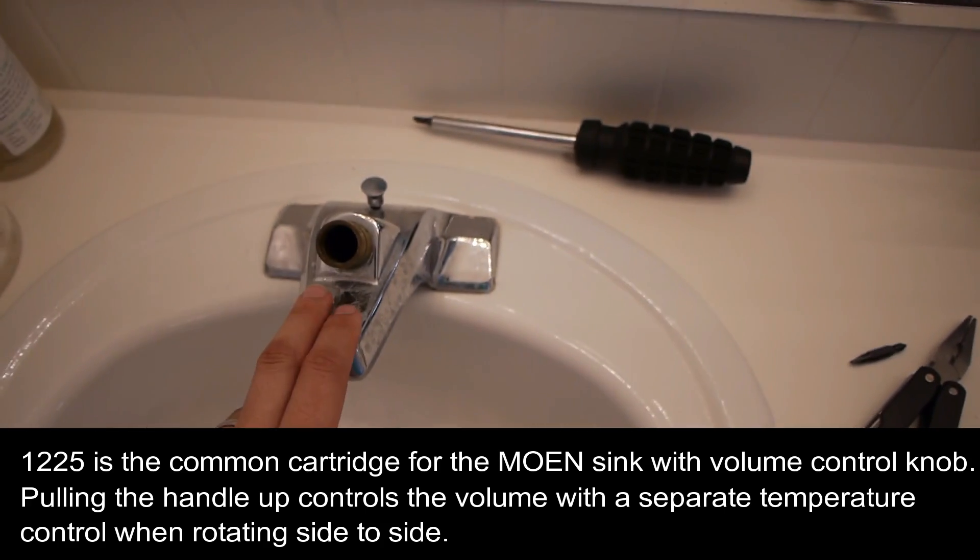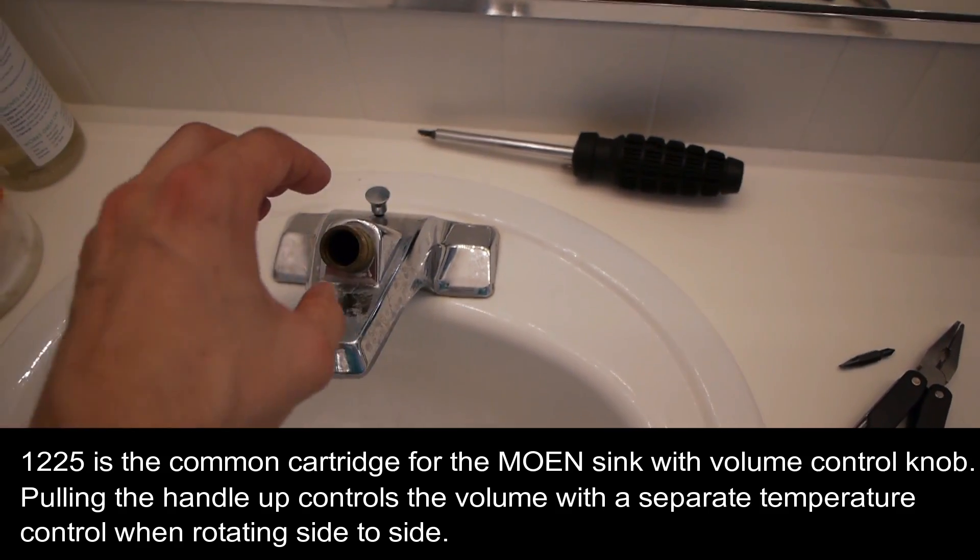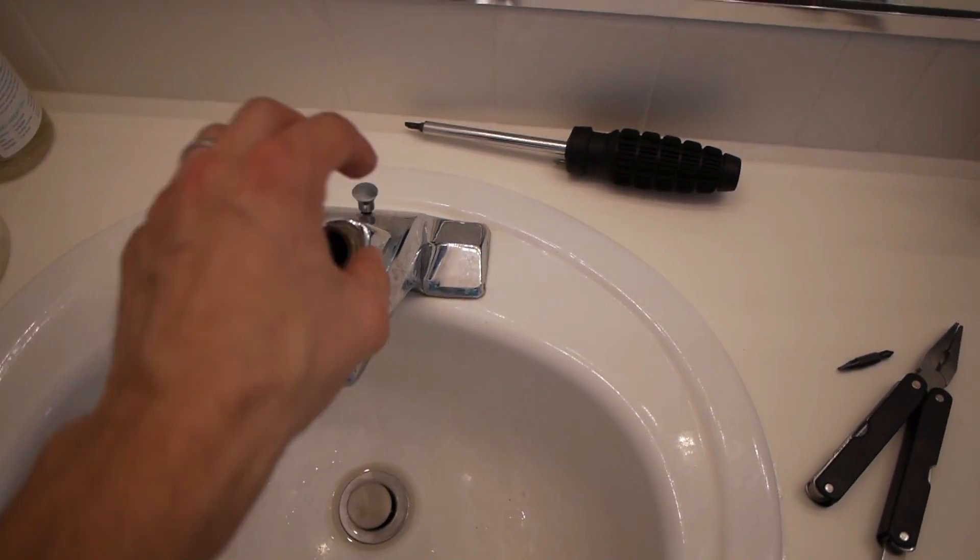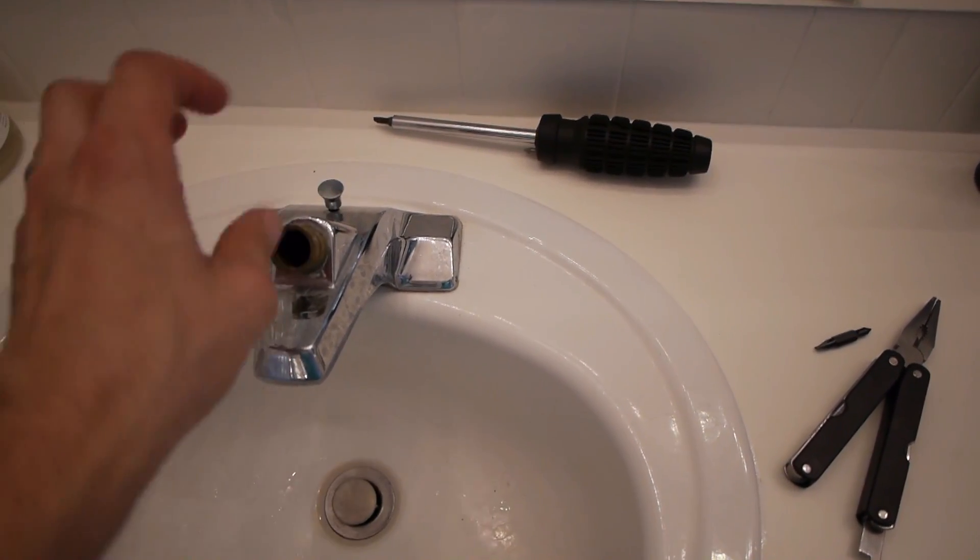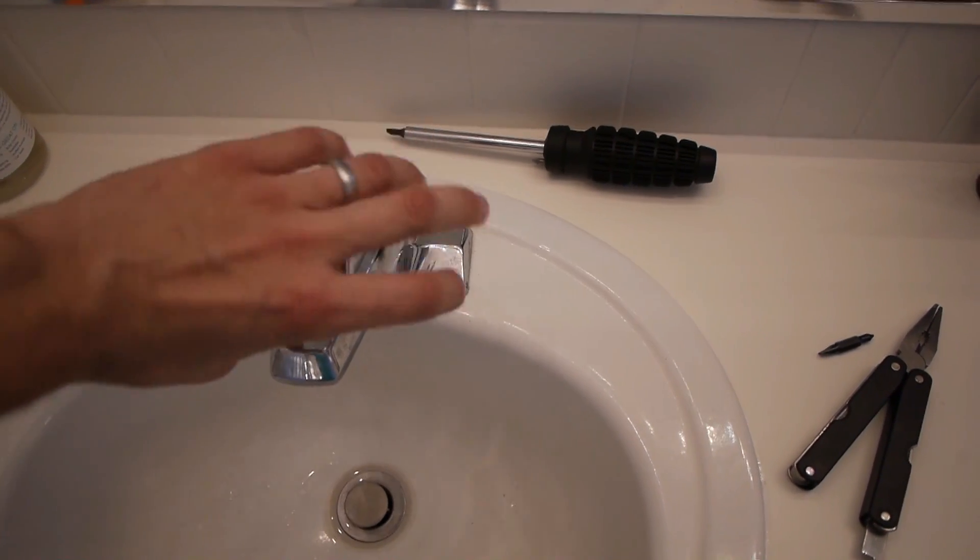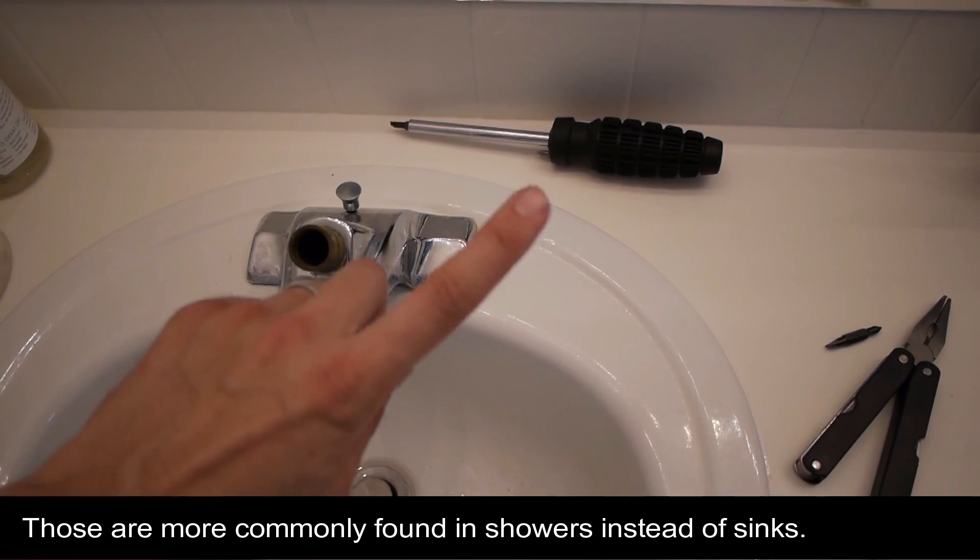Moen 1225 is exactly the structure that I have here, which controls the volume of the flow. When you pull out the handle, that controls how much water is actually coming out, and then you can rotate it left or right to get hot or cold.